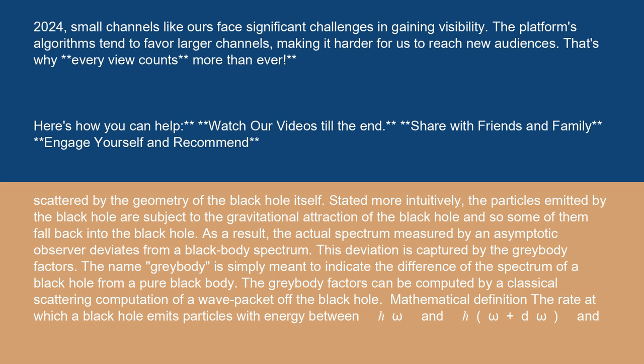The name gray body is simply meant to indicate the difference of the spectrum of a black hole from a pure black body. The gray body factors can be computed by a classical scattering computation of a wave packet off the black hole.